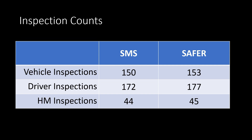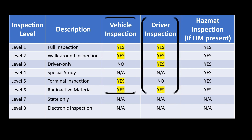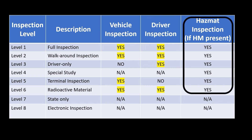But how can you tell what are driver inspections and which ones are vehicle inspections? For that, we need to look at the inspection levels. Vehicle inspections include those that are level 1, level 2, level 5, or level 6. Driver inspections include inspections that are level 1, level 2, level 3, or level 6. For hazmat inspections, they can be found at any level as long as hazmat is present — meaning you do not have to be a hazmat carrier in order to have a hazmat out-of-service rate.